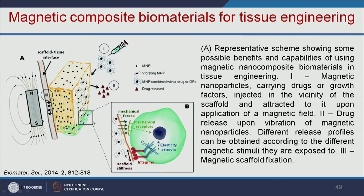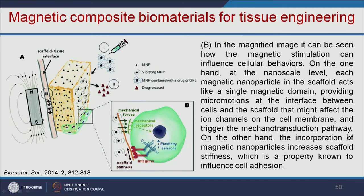We can also have a scaffold incorporating magnetic nanoparticles that carry growth factors. When an external magnetic field is applied, it releases the growth factors accordingly. Cells experience different mechanical forces in response to the magnetic field. These mechanical forces induce gene expression leading to expression of various proteins. This is called mechanotransduction.